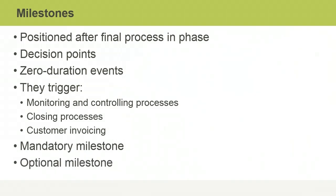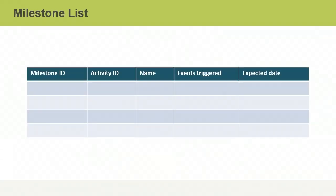You may also establish optional milestones within the project team. These could be used to accomplish desired goals, celebrate successes, and to stay motivated and focused on the project's achievements. So milestones are used to mark project achievements, and they may be mandatory or optional. It depends on whether they are required by the customer or simply established by the project team as a way to recognize and celebrate accomplishments.